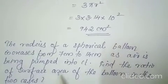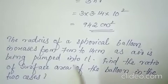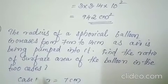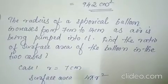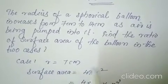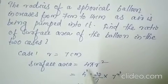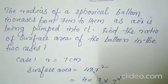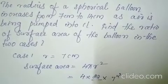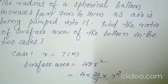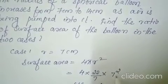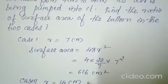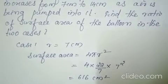The fourth question: the radius of a spherical balloon increases from 7 cm to 14 cm as air is being pumped into it. Find the ratio of the surface area of the balloon in the two cases. Case one: the radius is 7 cm. Find the surface area with the formula 4 pi r square — 4 into 22 by 7 into 7 square, that is 7 into 7. Cut one 7 and multiply. You will get the answer 616 cm square. This is case one.